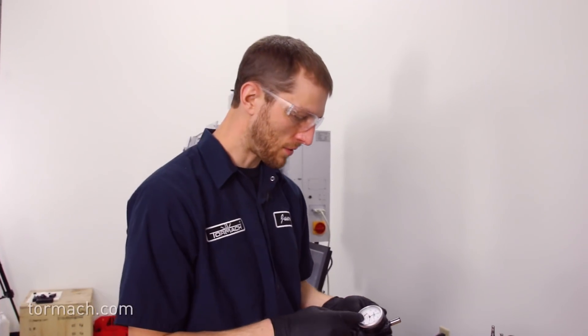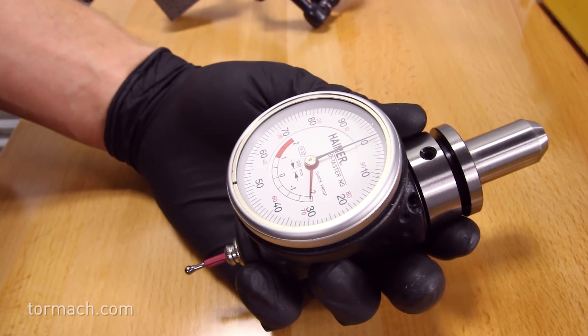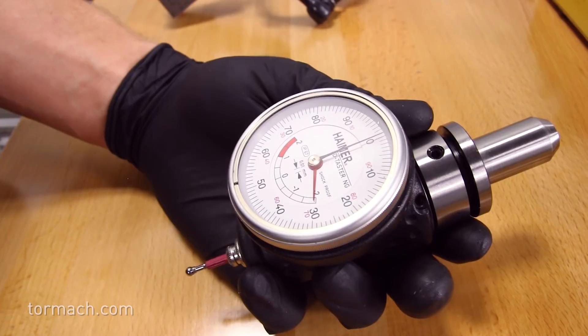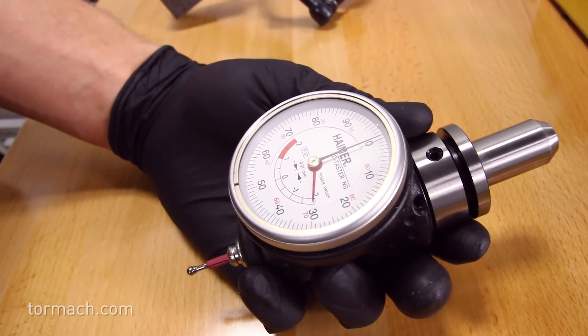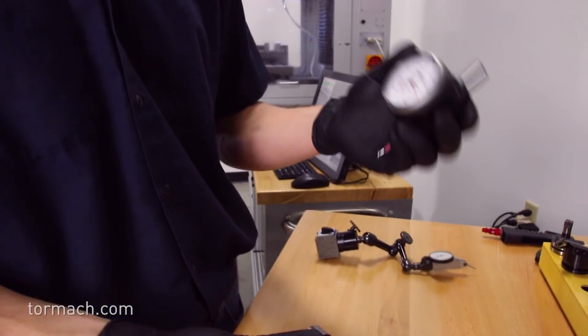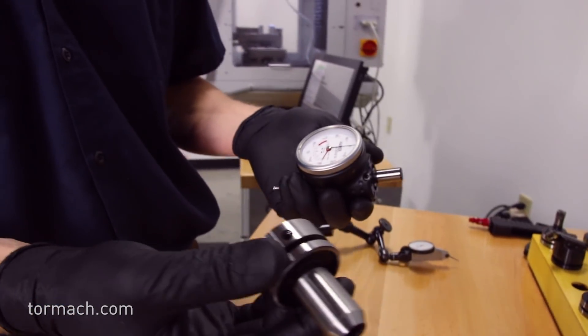So we've got the next generation sensor here. You can see it's the large face. It's the one that I prefer to use just because it's got the big face, nice and easy to read in the machine. As you can see there's two pieces here. We have the sensor itself and then we have the TTS holder.